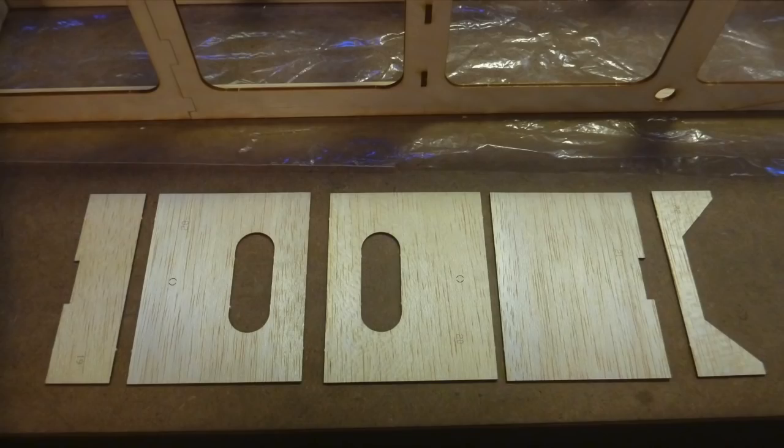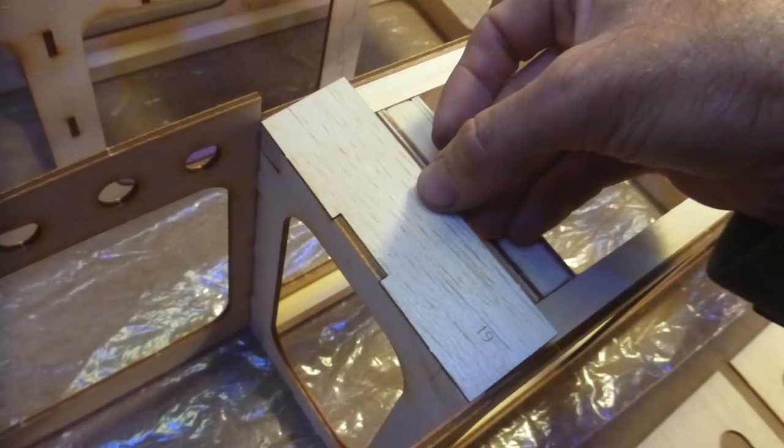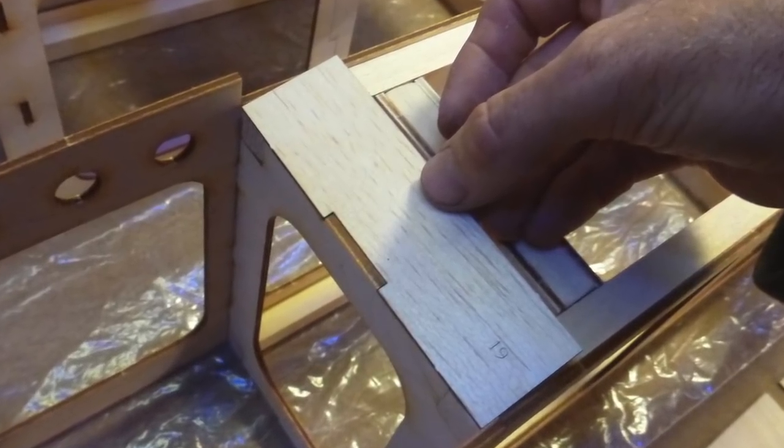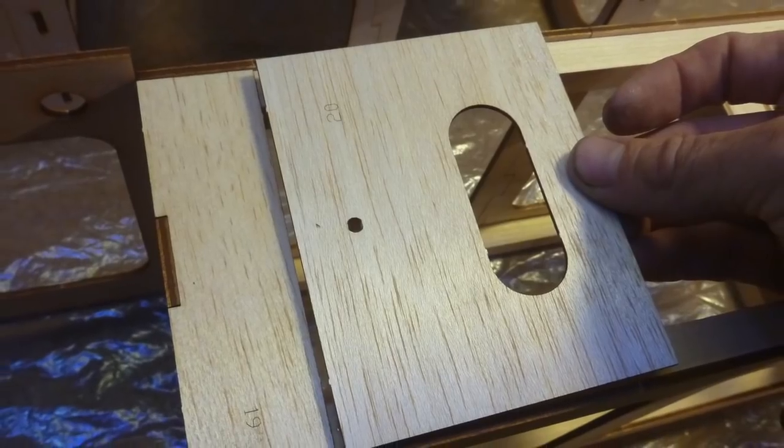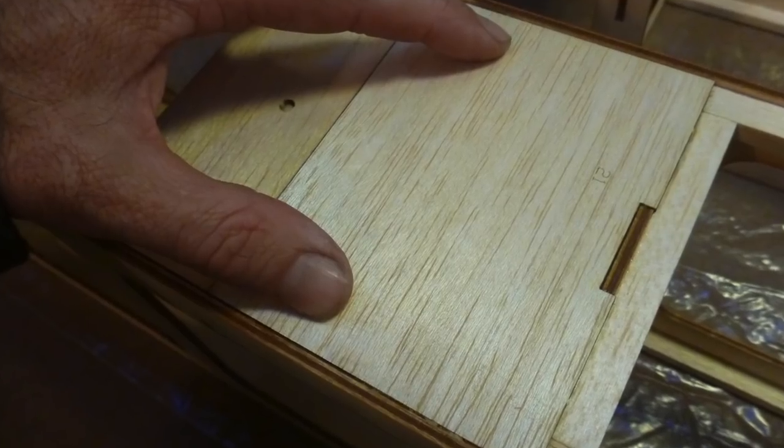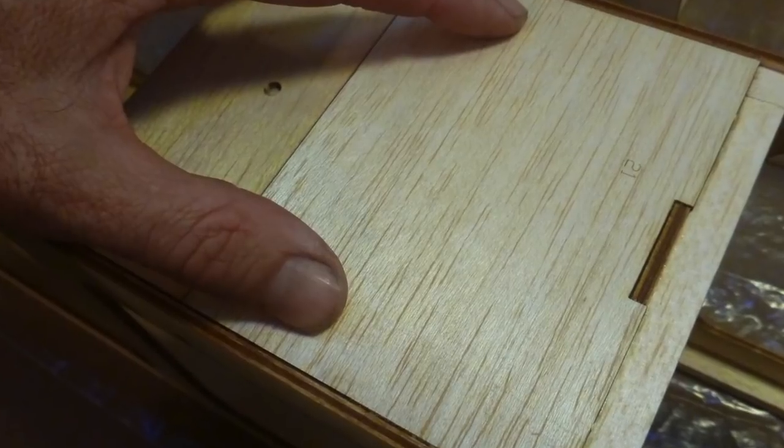Locate parts number 19, 20, a second 20, 21, and 22. Starting at the front of the fuselage center section on top of the fuselage, glue them into place, working your way back and making sure they fit flush with the fuselage sides.